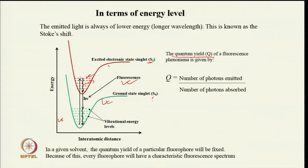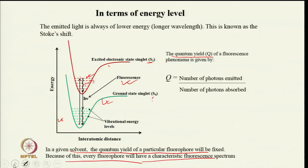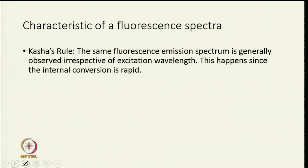An important parameter is quantum yield, given by the number of photons emitted divided by the number absorbed: Q = (emission rate of fluorophore) / (emission rate + rate of non-radiative decay). Quantum yield is less than 1 due to losses from non-radiative processes. In a given solvent, the quantum yield of a particular fluorophore is fixed, so every fluorophore has a characteristic fluorescence spectrum. The second characteristic is Kasha's rule: the same fluorescence emission spectrum is observed irrespective of excitation wavelength, because internal conversion is rapid.